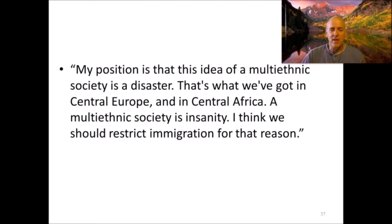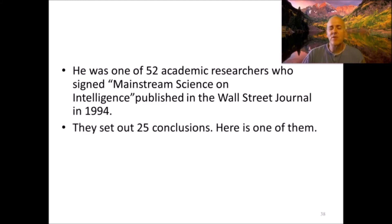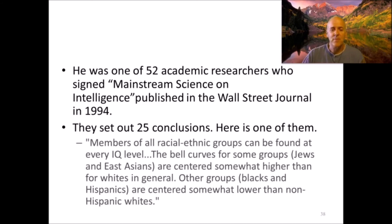In other writings Hardin stated: 'My position is that the idea of a multi-ethnic society is a disaster — that's what we've got in central Europe and central Africa. A multi-ethnic society is insanity. I think we should restrict immigration for that reason.' He was also one of 52 academic researchers who signed a paper called 'Mainstream Science on Intelligence' published in the Wall Street Journal in 1994. Only 10 of the signers were actual intelligence researchers, and many intelligence researchers disagreed with it. Among its conclusions: 'The bell curves for some groups — Jews and East Asians — are centered somewhat higher than for whites, while other groups — Blacks and Hispanics — are centered somewhat lower than non-Hispanic whites.'